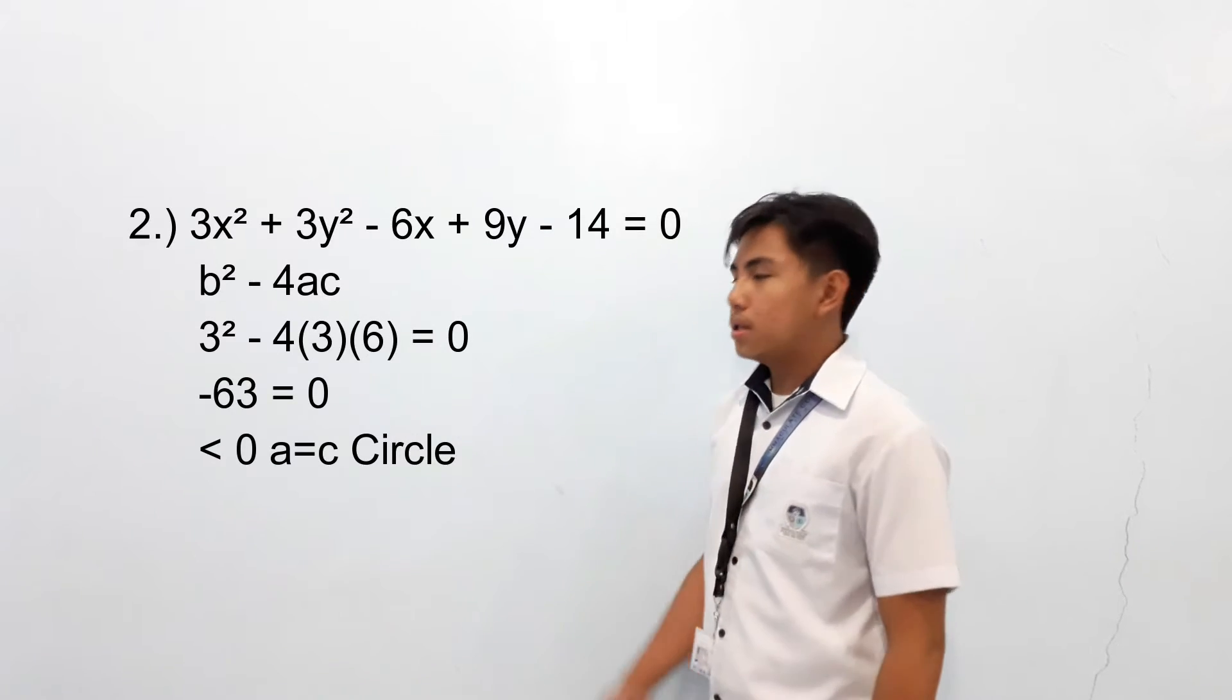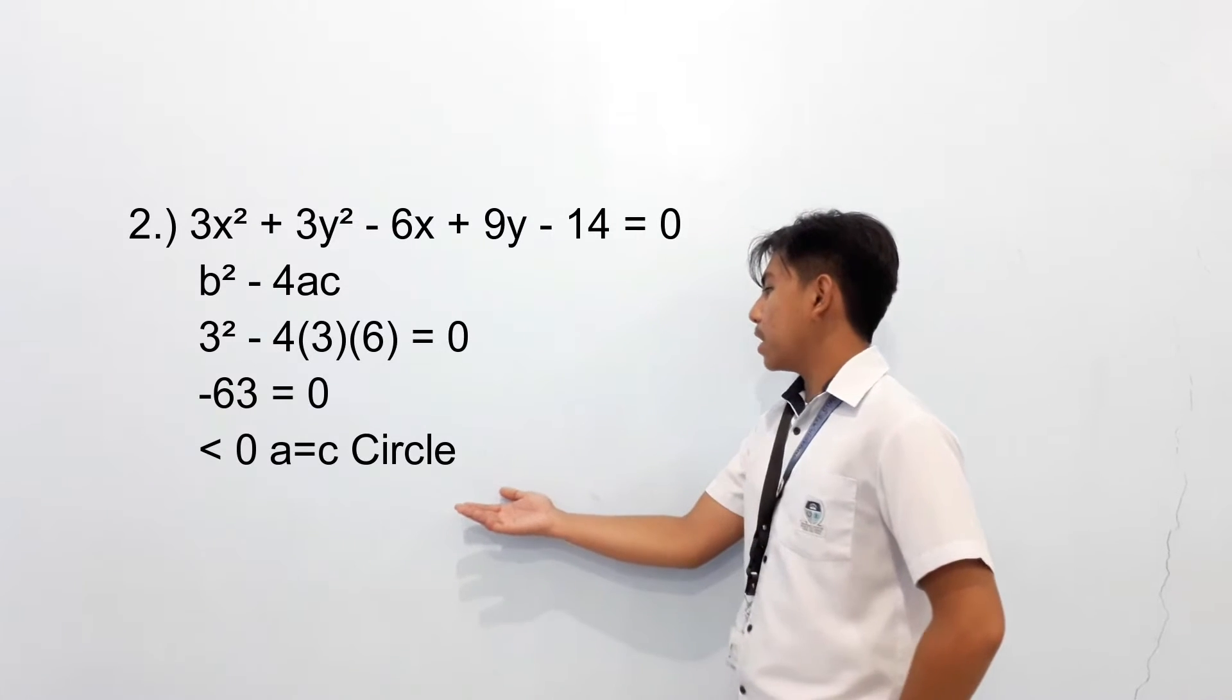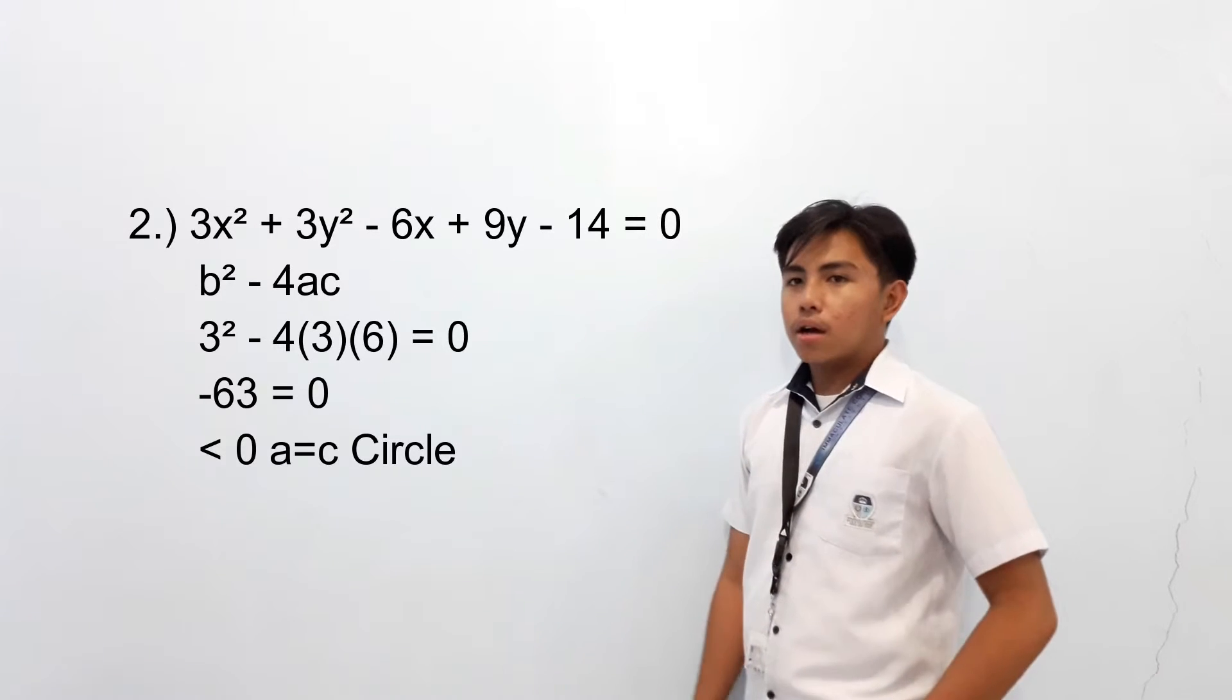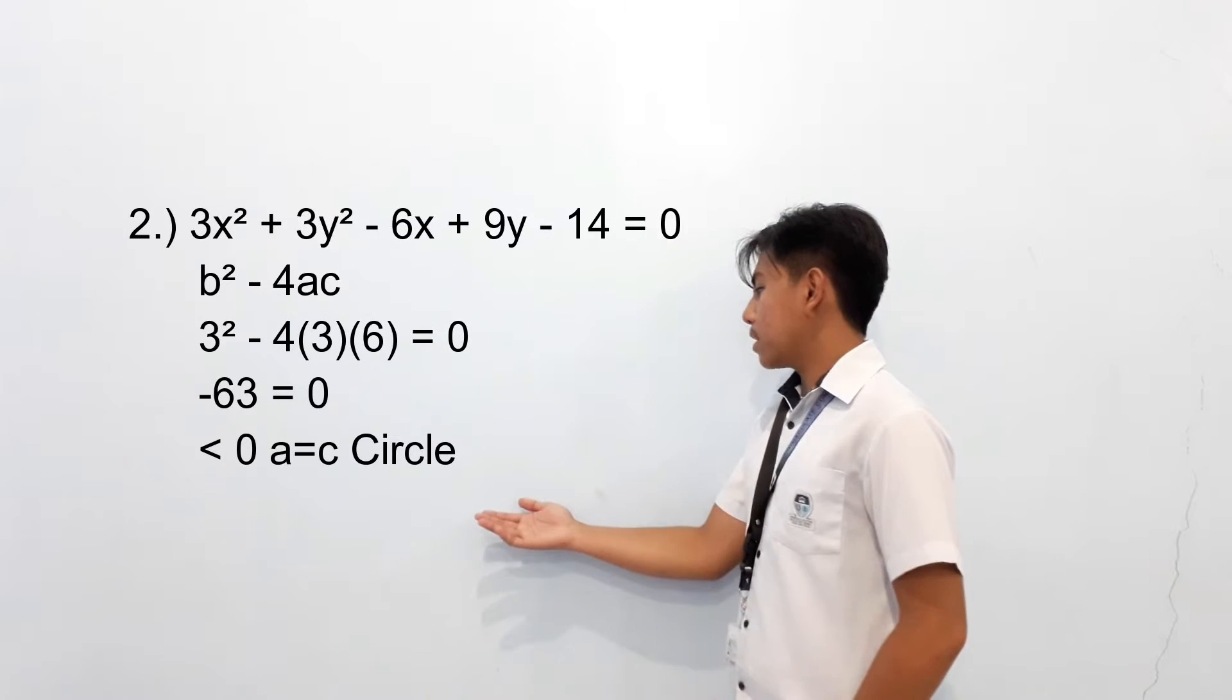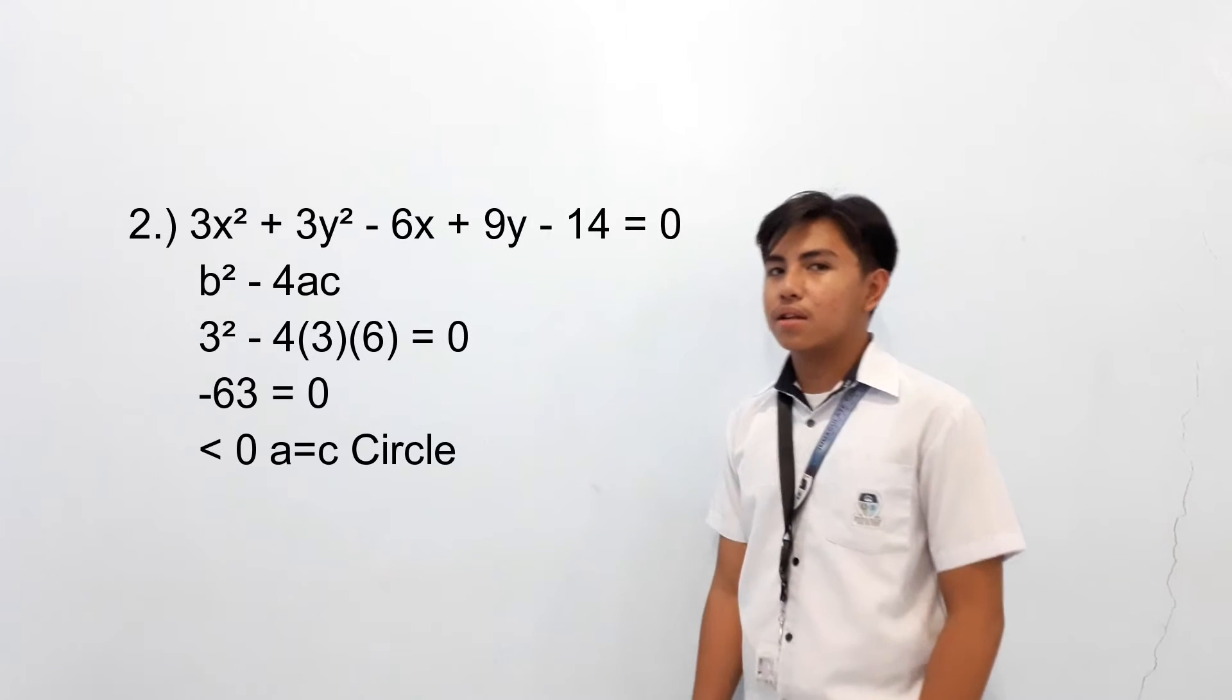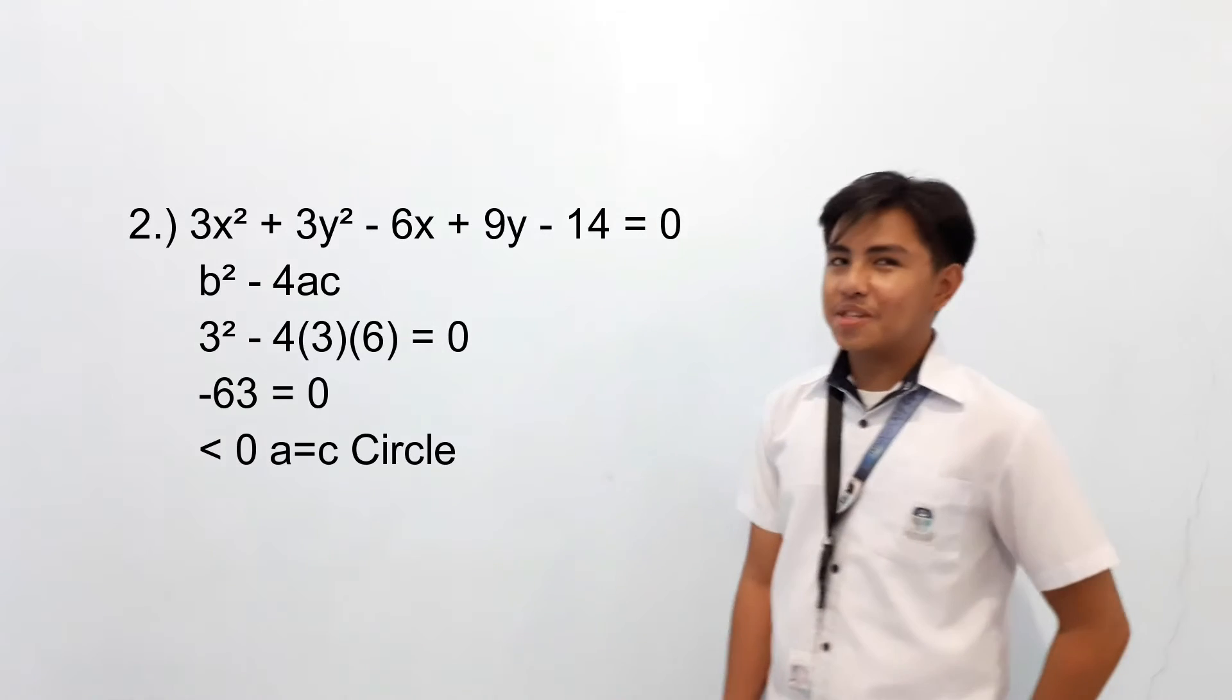Number two: 3x² + 3y² - 6x + 9y - 14 = 0. B² - 4AC: 3² - 4(3)(6) = -63, which equals zero. The answer is circle because the answer is less than zero and A is equal to C.